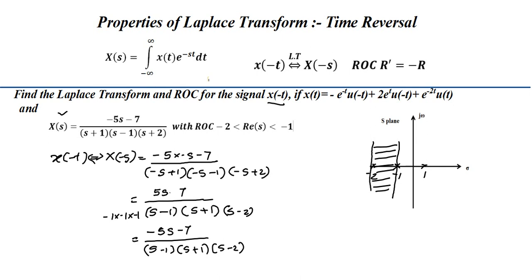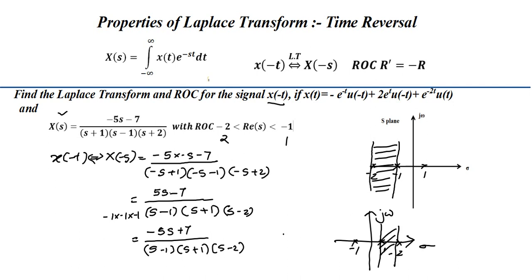After correcting the sign, the numerator becomes -5s + 7 (i.e., minus times -7 gives +7). The final result is (-5s + 7) / [(s-1)(s+1)(s-2)]. For the ROC, the poles shift: -2 becomes +2 and -1 becomes +1, so the ROC is now between 1 and 2, i.e., 1 < sigma < 2. This reflects the sign reversal of sigma and j-omega in the s-plane.